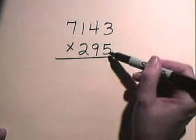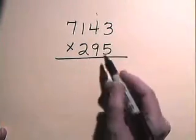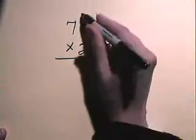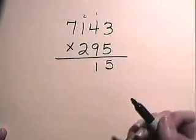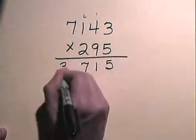Starting in the ones place, 5 times 3 is 15, carry the 1. 5 times 4 is 20, adding the 1 is 21. 5 times 1 is 5, plus the 2 is 7. 5 times 7 is 35.